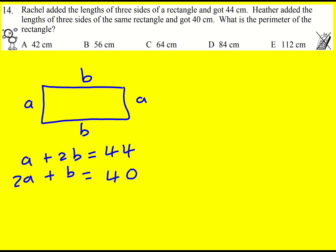And then we want to know the perimeter. So we actually want to know what 2A plus 2B is. Well, we can take these equations and we can just add them actually. You don't need to sort of solve for A and B. You can if you want, but we're just going to get 3A plus 3B is equal to 84.